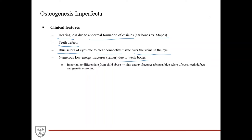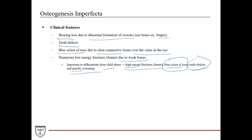It's important on boards to differentiate osteogenesis imperfecta from child abuse, as they can have similar presentations. Child abuse tends to involve high-energy fractures, whereas osteogenesis imperfecta involves low-energy mechanisms of injury. Importantly, abused children will not have blue sclera or teeth defects, unlike osteogenesis imperfecta. Genetic screening can also help differentiate them. So the blue sclera, teeth defects, low-energy injury mechanism, and genetic screening are the key distinguishing features.